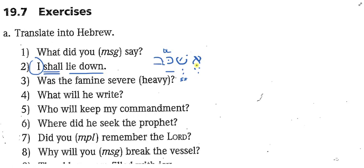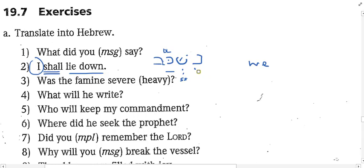Let's tinker with this a little. What if I want to say 'we shall lie down'? What would I have to change? Keep the root letters, but the prefix is not aleph — it's nun. And the segol becomes a hiriq. So it's nishkav — 'we will lie down.'